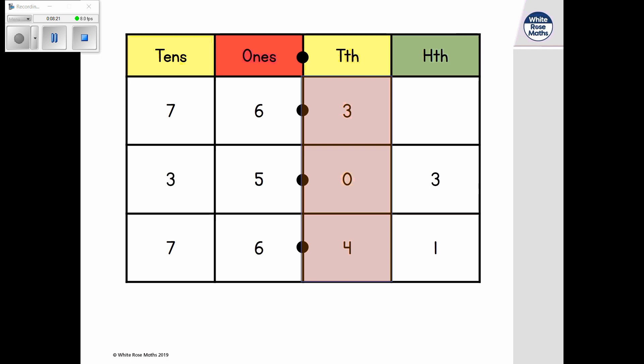76.3 has three tenths. And 76.41 has four tenths. Therefore, 76.3 is the next number. The largest number is 76.41.